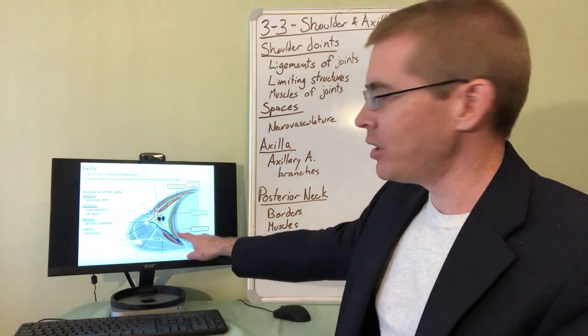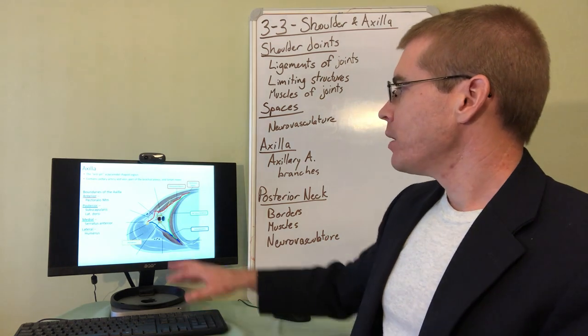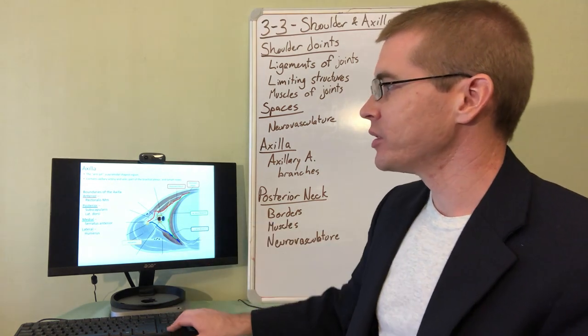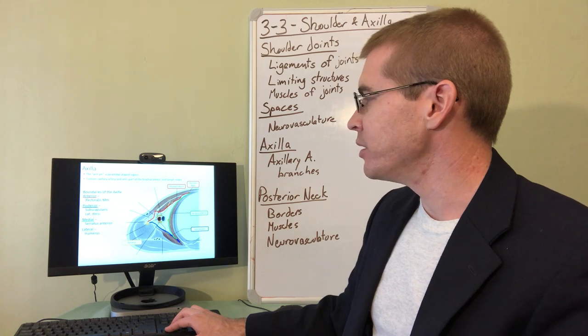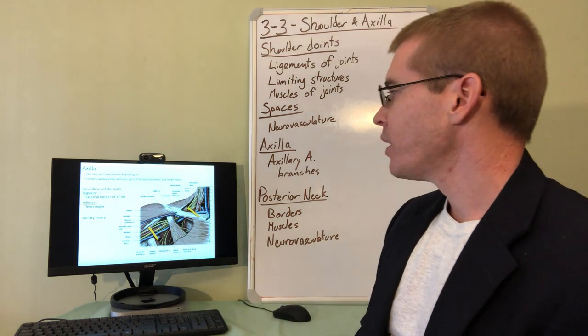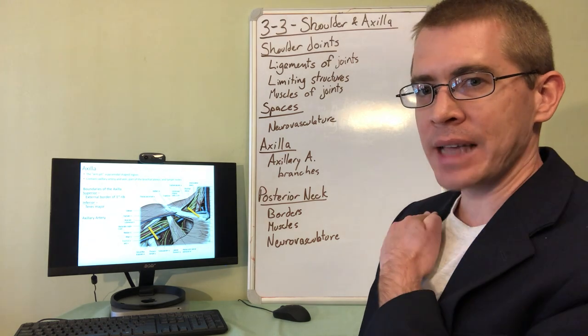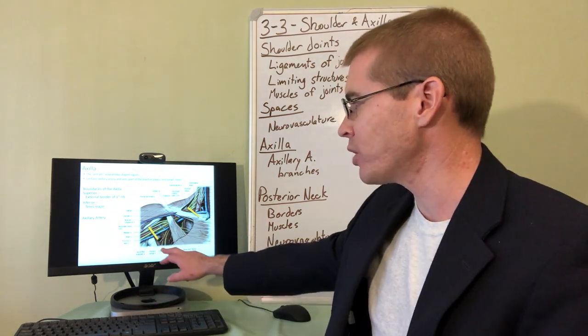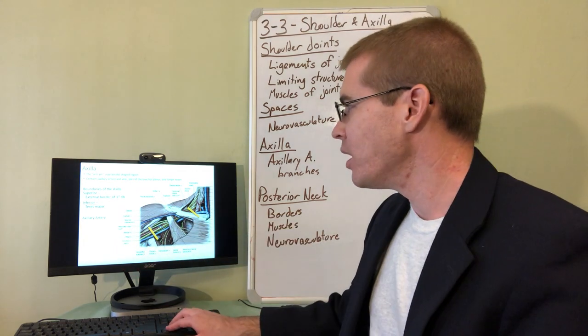So the boundaries of the axilla, this triangular pyramidal shape, triangular prism shape, is listed here. Anteriorly, the pectoralis major and minor muscles. Posteriorly, subscapularis and lat dorsi. Serratus anterior on the thoracic wall. And then the humerus laterally. So this armpit pyramidal shape region has additional boundaries, a superior boundary and an inferior boundary. So the first rib is as high as the axilla goes. And the inferior boundary is teres major. As teres major crosses, that's what we consider the end of the axilla. And you can palpate your teres major with your arm extended, and that's the lowest point of your armpit. So within that region is the axillary artery.